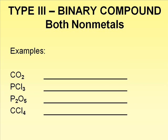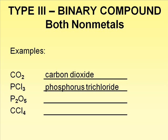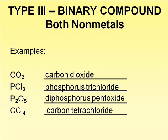Each of these compounds are classified as Type 3 because they contain two different non-metals. The name of the first example is carbon dioxide. I do not use a prefix with the first element since it does not have a subscript. Remember to always use a prefix with the second element. The second compound is named phosphorus trichloride. The third example is diphosphorus pentoxide.